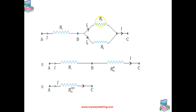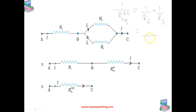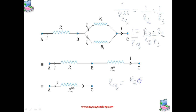In the first step, we reduce the parallel combination of R2 and R3 by finding the equivalent resistance. Using the formula: 1/R_equivalent = 1/R2 + 1/R3. Taking the LCM gives (R3 + R2)/(R2·R3), so R_equivalent = R2·R3/(R2 + R3). This is the equivalent resistance of the two resistors connected in parallel.